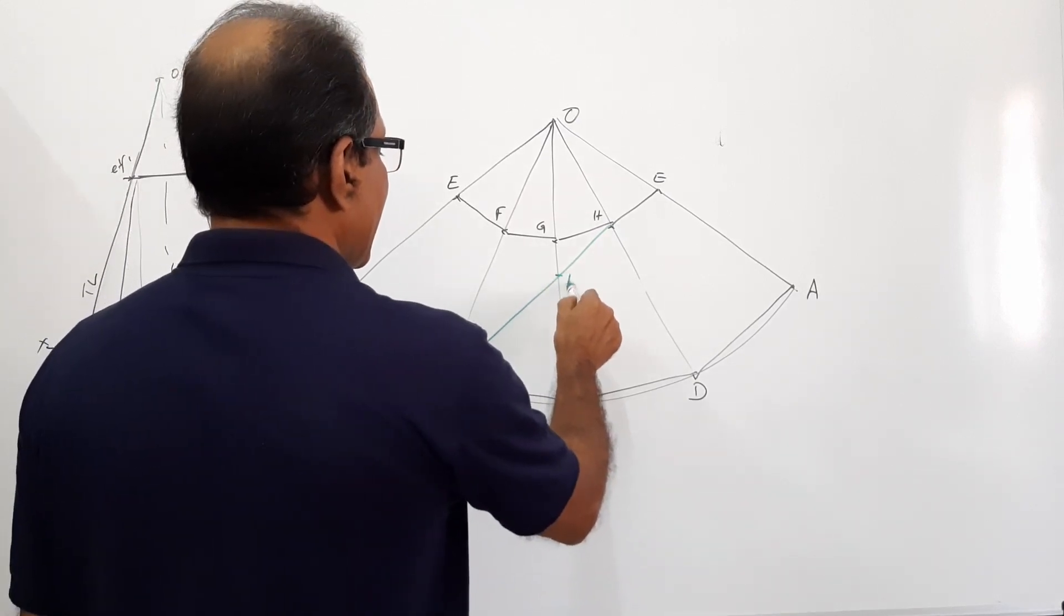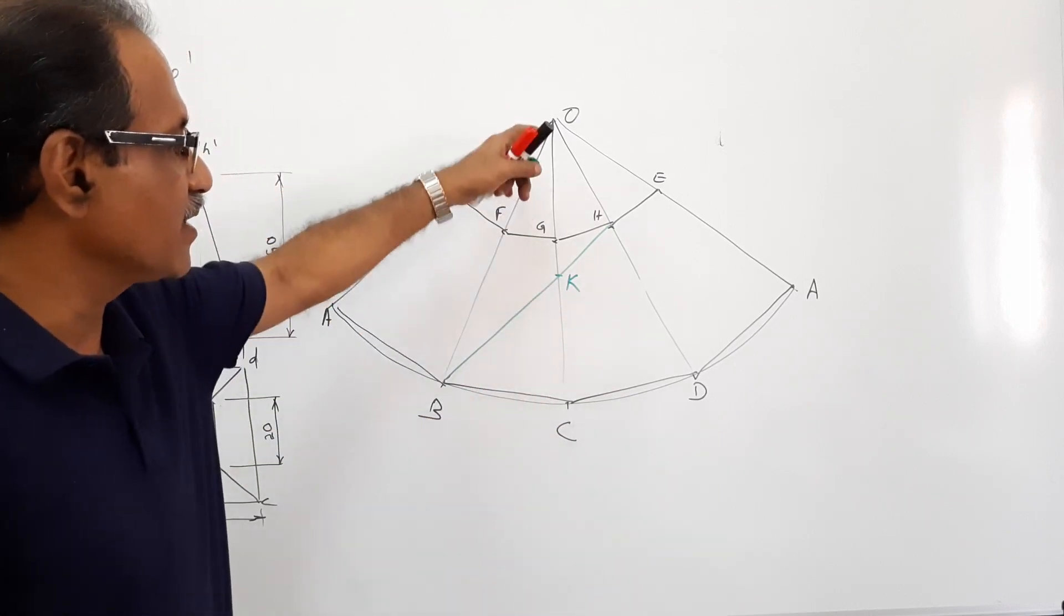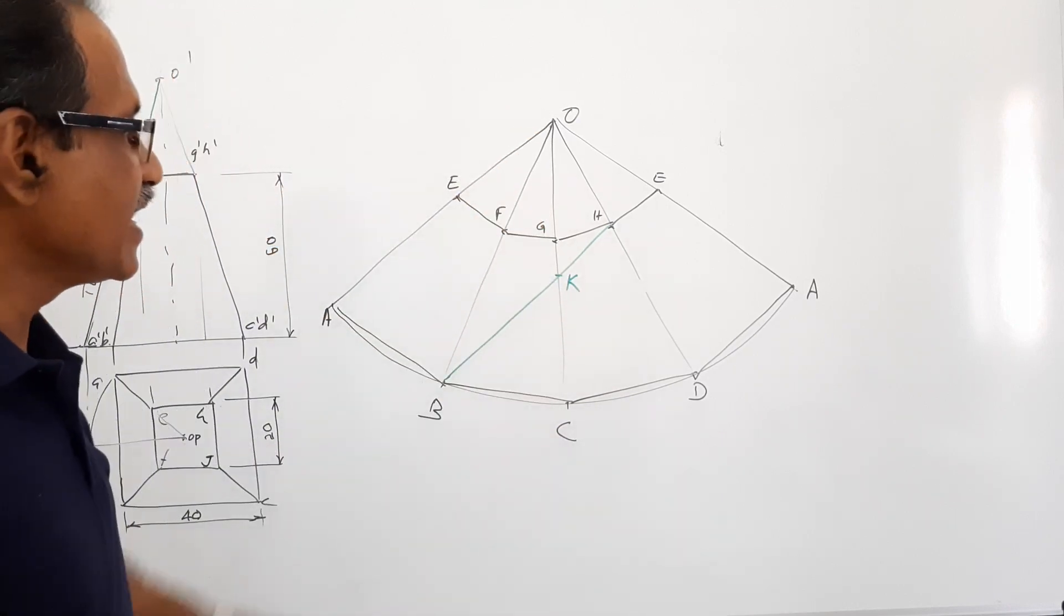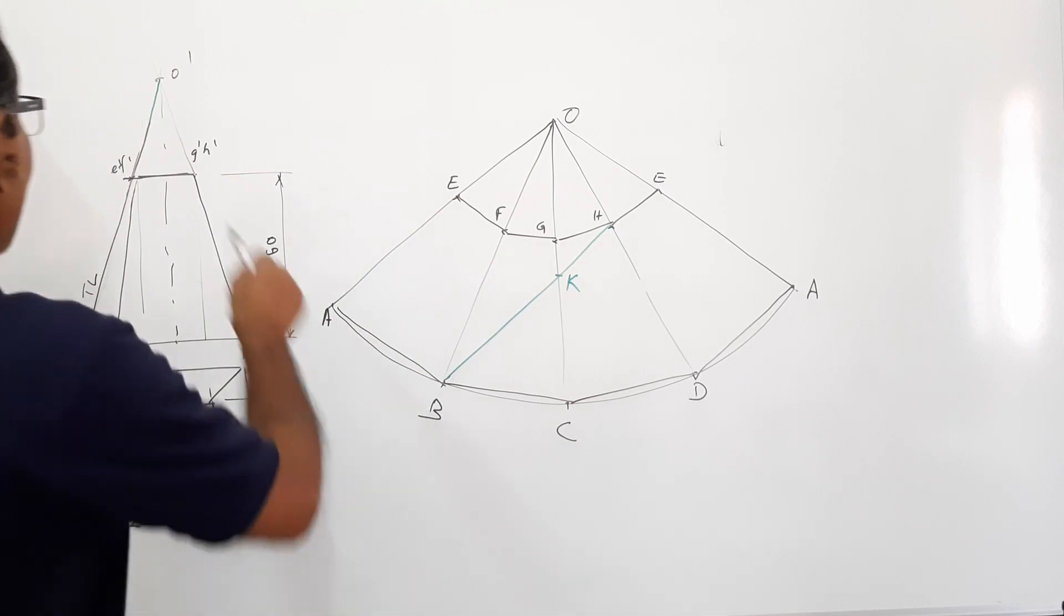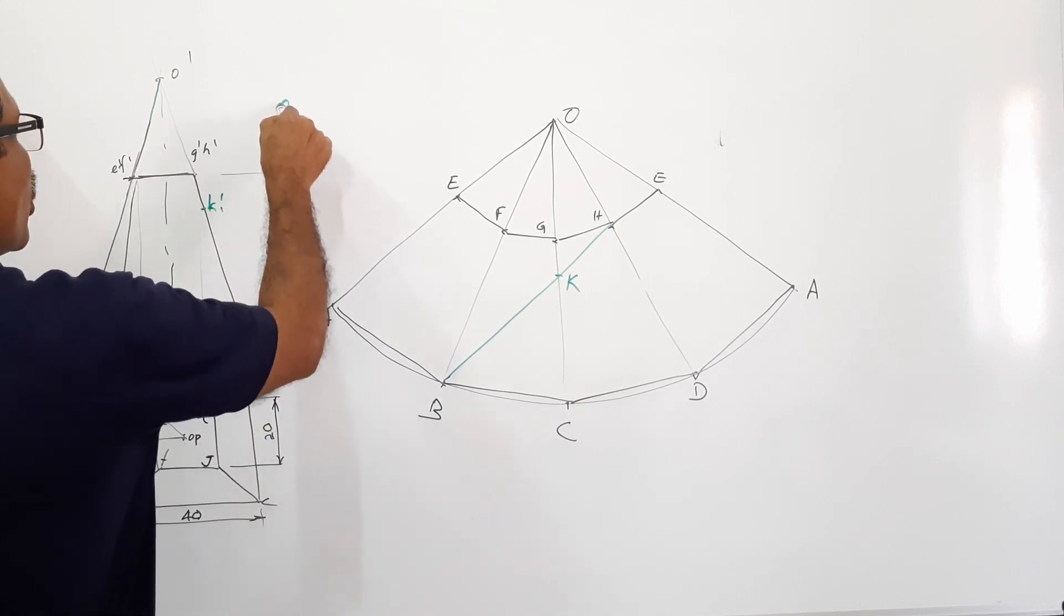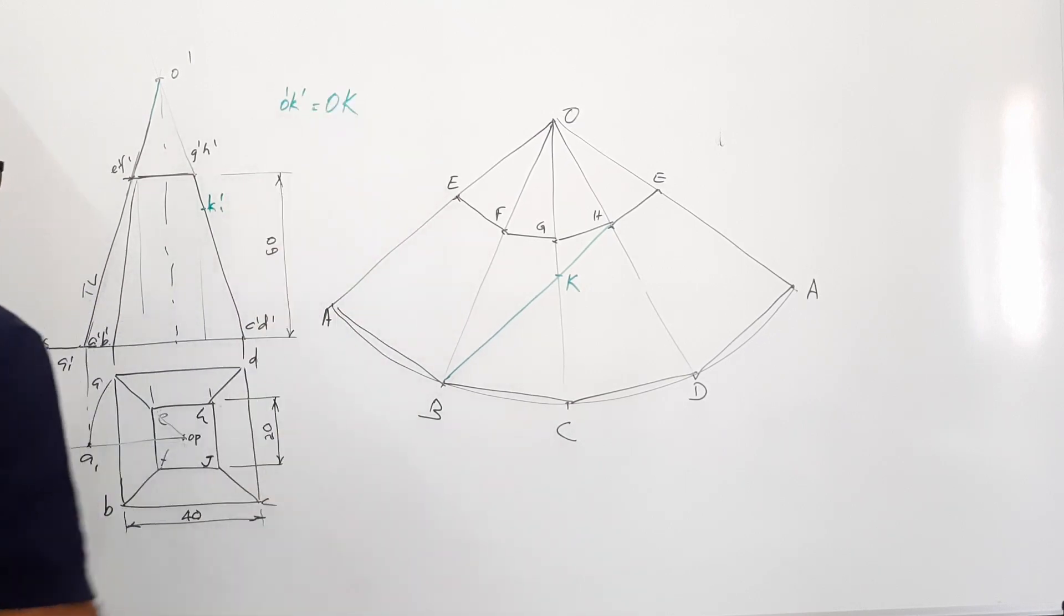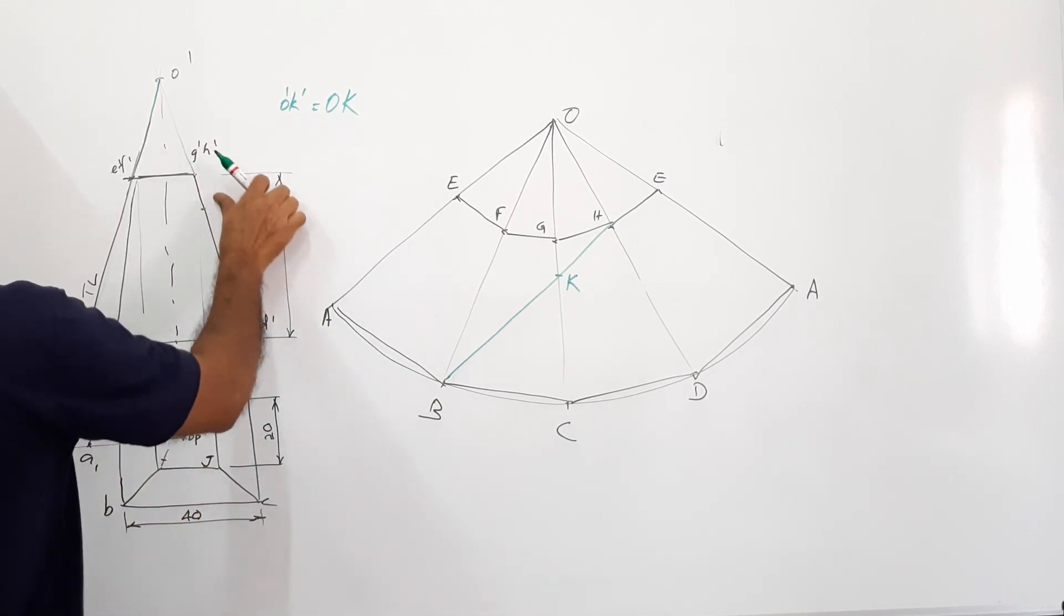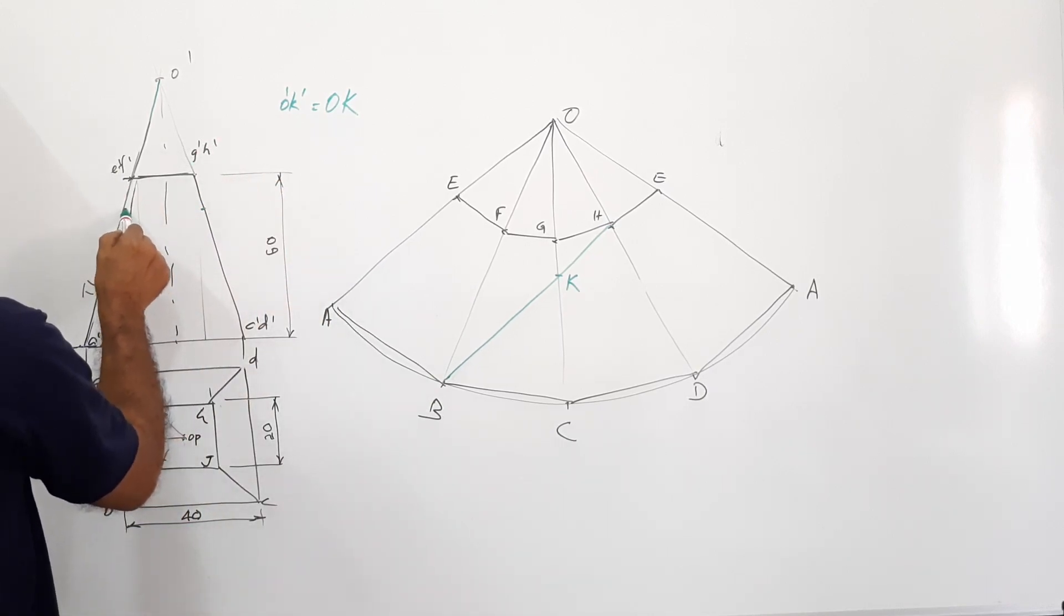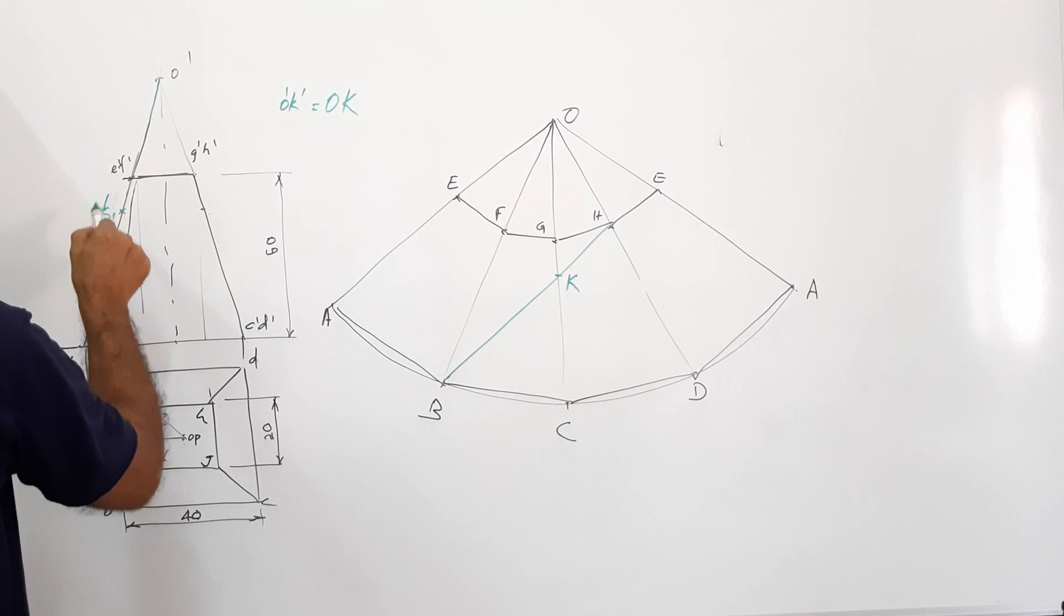What you have to do? You have to locate this point K. Where is K? K is on OC or GC. Take this distance OK and mark K1 dash. O dash K1 dash equals OK. Mark it on the true length, K1 dash.